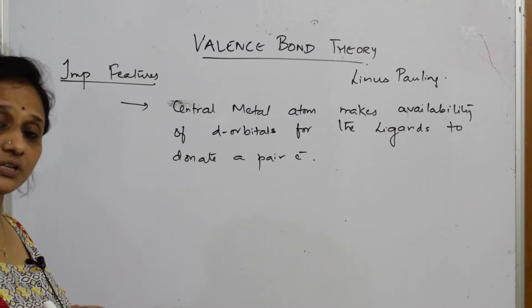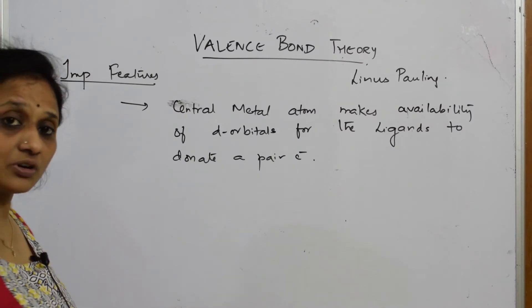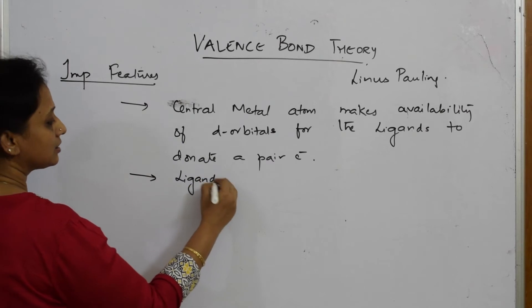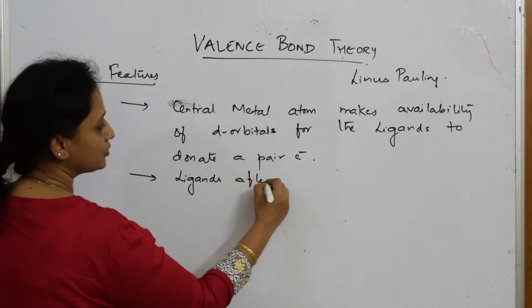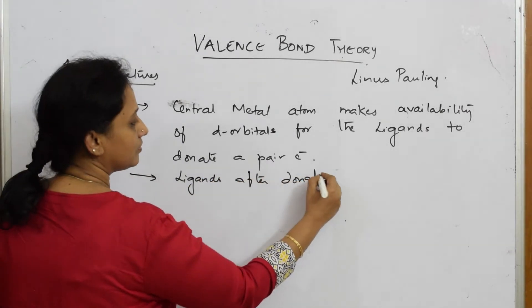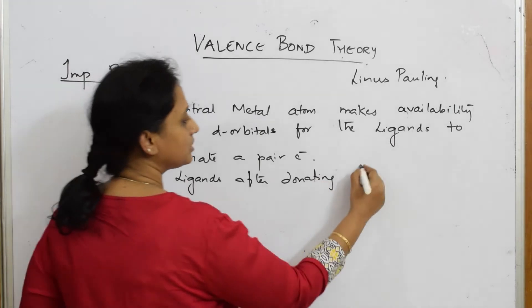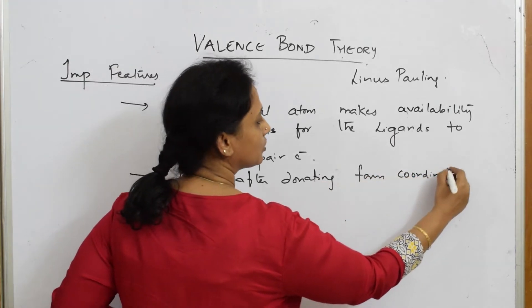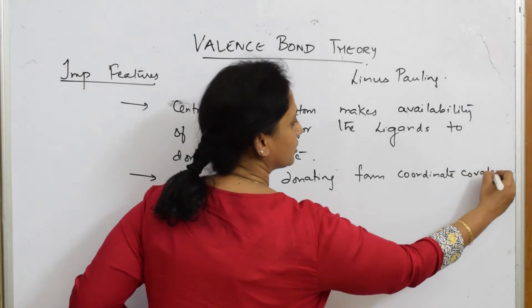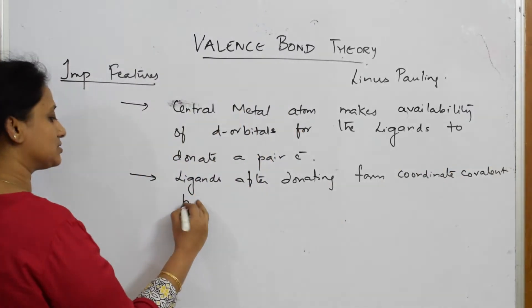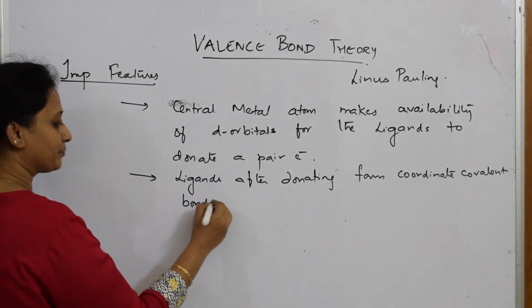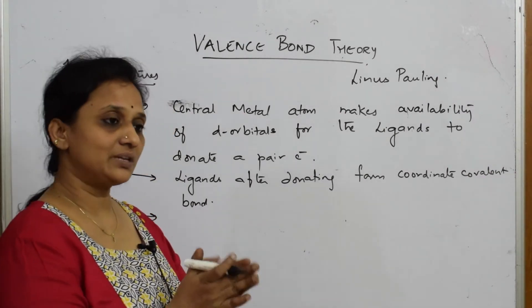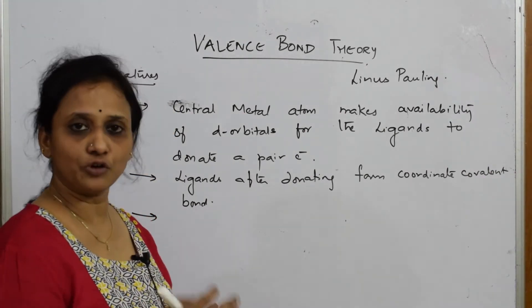After the ligand donates its lone pair, what type of bond does it form? Importantly, ligands after donating form a coordinate covalent bond. This is also already understood from what we have studied. Now, when the metal and the ligand try to form new hybridized orbitals, the next important concept comes in.